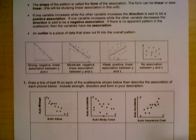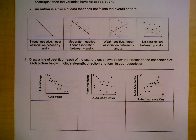All right, so if we go down to the examples, question number one says, draw a line of best fit on each of the scatter plots shown below, then describe the association of each picture below. Include the strength, the direction, and the form.